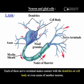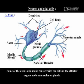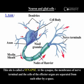Each of these nerve terminals makes contact with the dendrites, cell body, or even axons of another neuron. Some axons also make contact with cells in the effector organs such as muscles or glands. This site is called a synapse. At the synapse, the membrane of the nerve terminal and the cells of the effector organ are separated from each other.